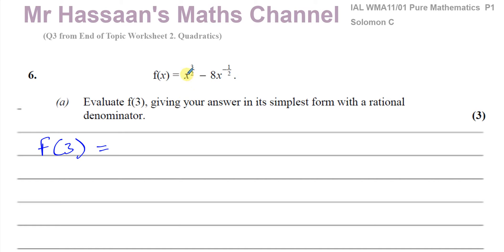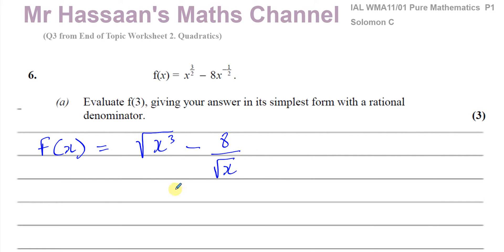First, I'm going to rewrite the equation in root form. Something to the power of three over two: the numerator is the power, so this is x to the power of three, and the denominator is the root, so this means the square root. That gives us the square root of x cubed, minus eight over the square root of x. Writing in this form makes it easy when we substitute values in. So substituting three: I get the square root of three cubed minus eight over the square root of three.